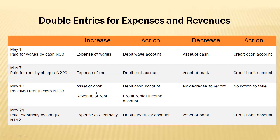On May 16th: paid electricity by check, 142 Naira. Electricity is an expense, and any time an expense account increases, we debit — so you debit electricity account. You are paying through check, meaning whatever is in your bank account will reduce. Bank account is an asset account, and any time the bank account reduces, we credit bank account. That's how you practically treat accounting transactions.